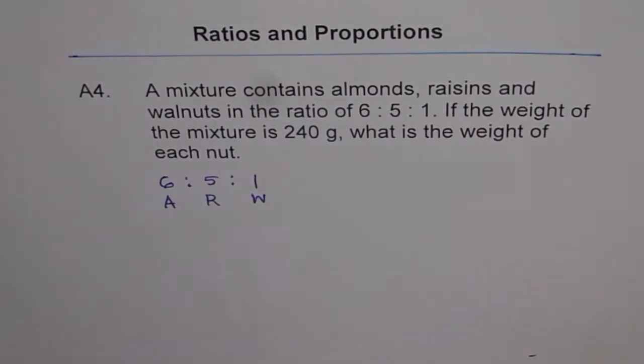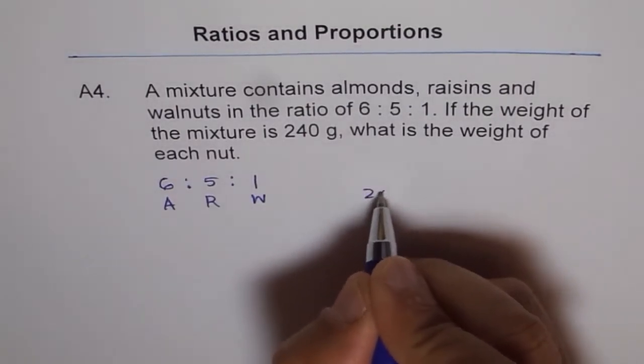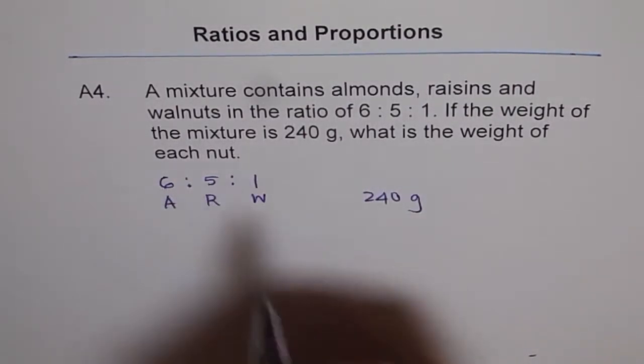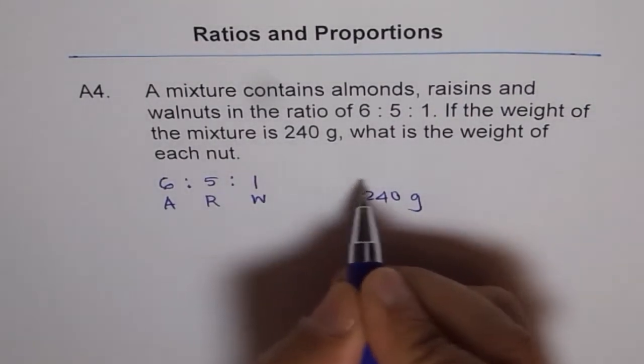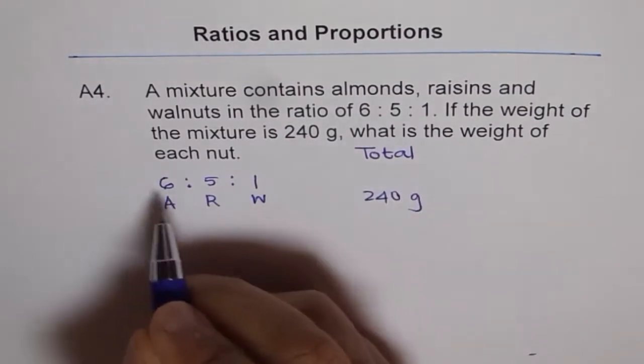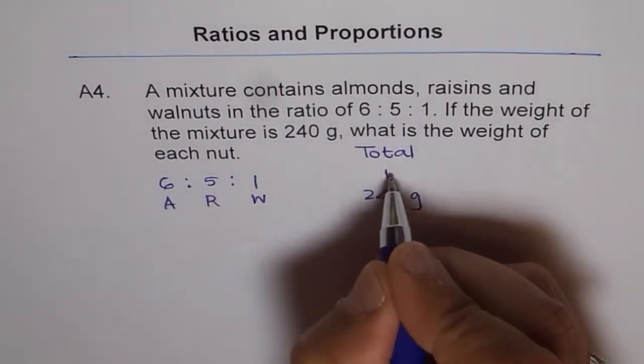Another thing which we are given is that the total of all these is 240 grams. But what is the total of 6, 5 and 1? So let's find the total. 6 and 5 is 11, 11 plus 1 is 12, right?